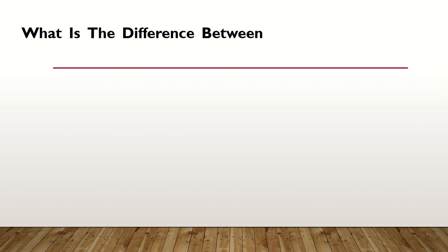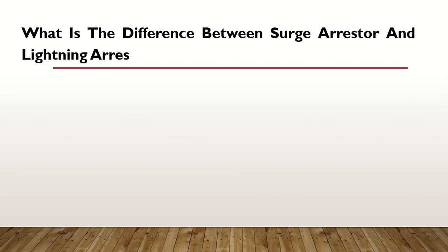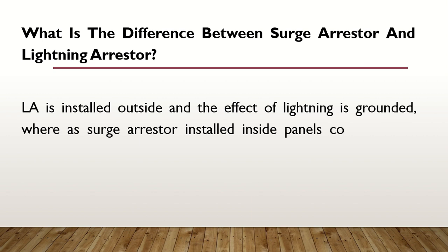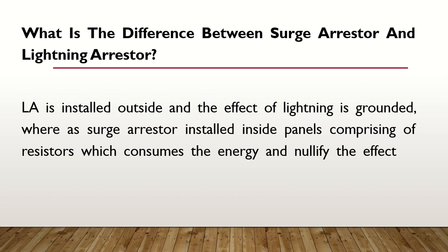What is the difference between a surge arrestor and a lightning arrestor? A lightning arrestor is installed outside and the effect of lightning is grounded, whereas a surge arrestor is installed inside panel boards, comprising resistors which consume the energy and nullify the effect of surge. Surge means a high rise in voltage.